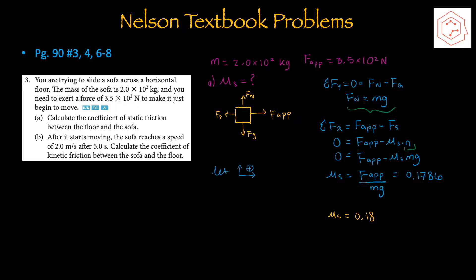Now let's go through solving the end-of-section problems from the Nelson textbook. Starting with page 90 number 3: you are trying to slide a sofa across a horizontal floor. The mass of the sofa is 2.0 × 10² kg. You need to exert a force of 3.5 × 10² N to make it just begin to move. Calculate the coefficient of static friction between the floor and the sofa.